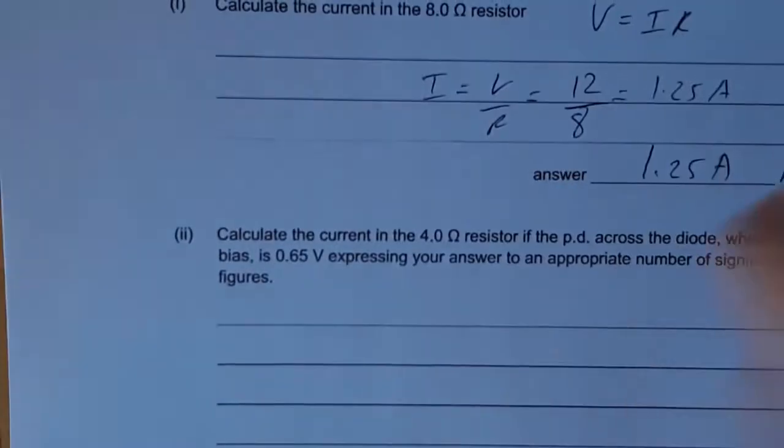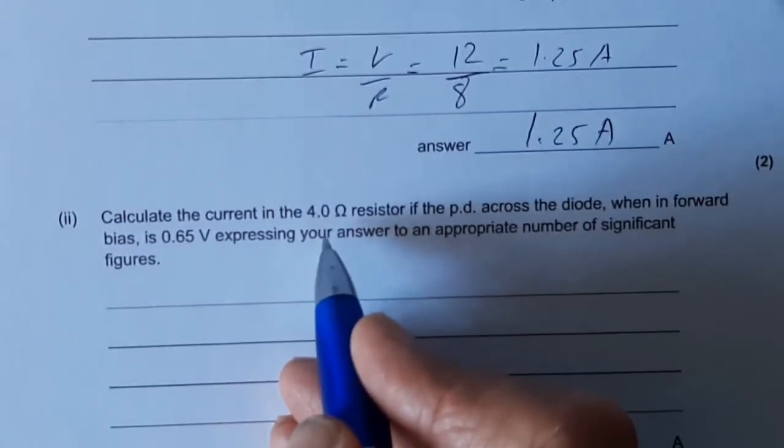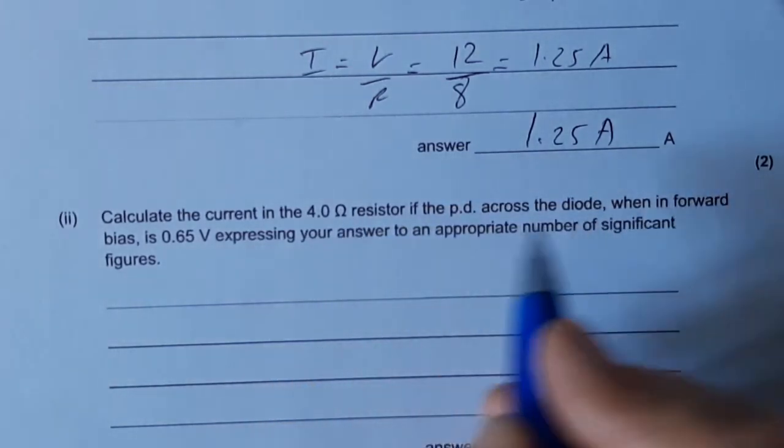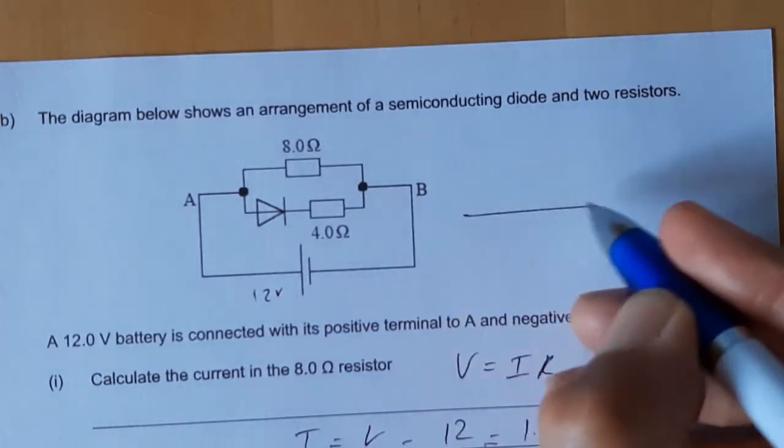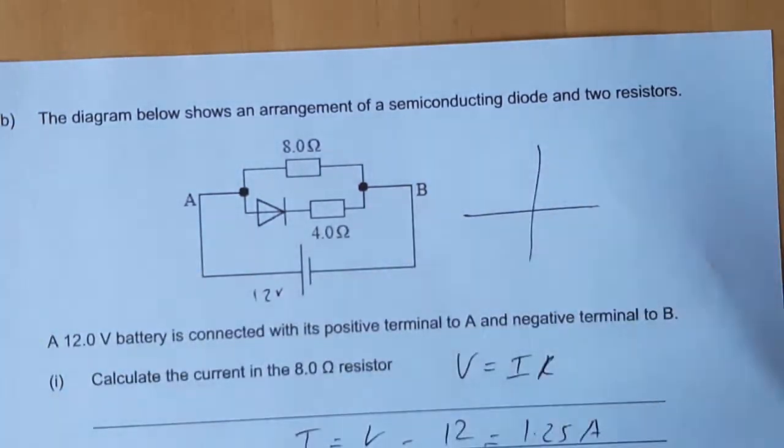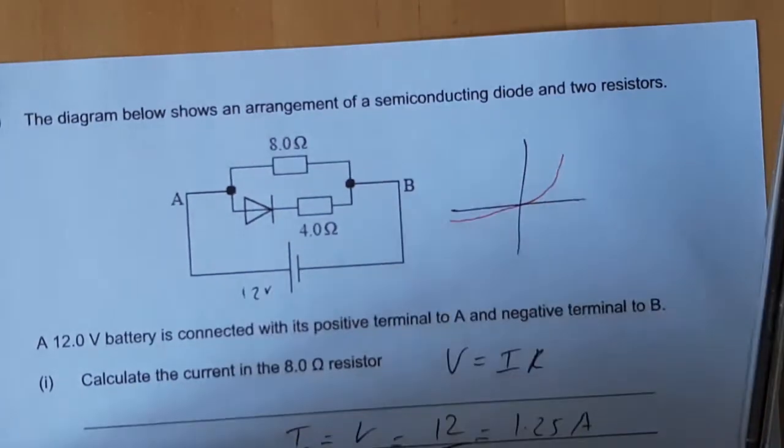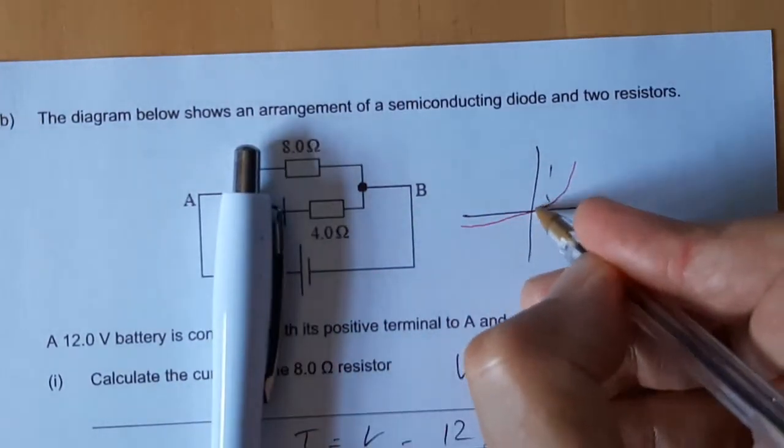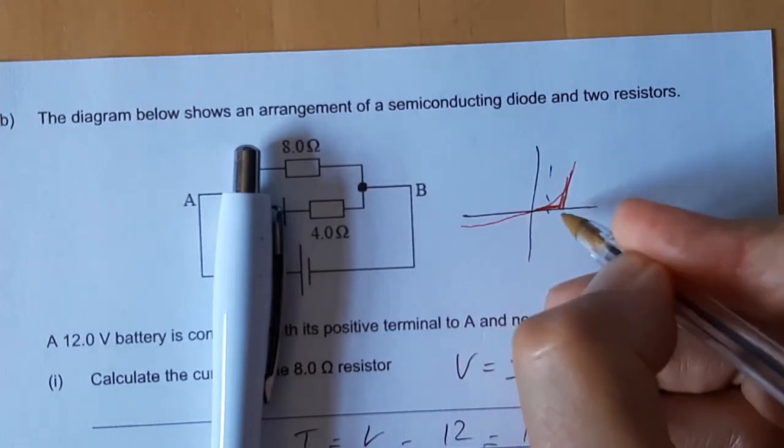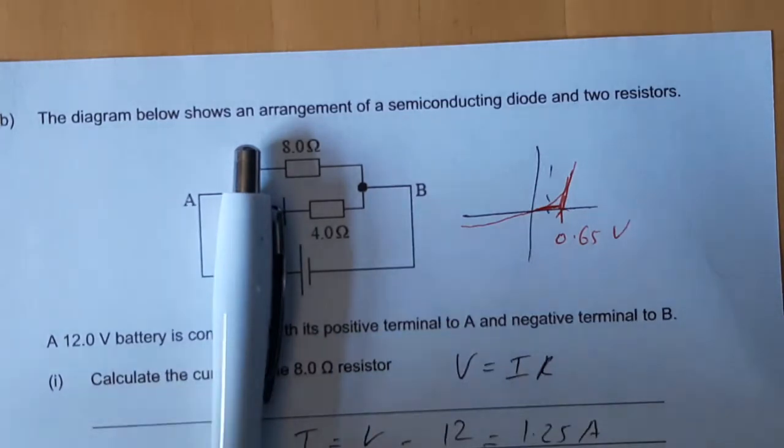Calculate the current in the 4 ohm resistor if the p.d. across the diode in forward bias is 0.65 volts. So that's referring to this part of the graph here where actually we can be pretty sure about what the voltage is. I haven't got that quite right - it's got to go really flat and then suddenly take off. It's about 0.65 volts.